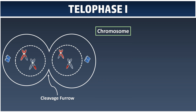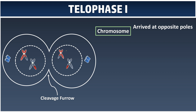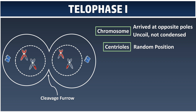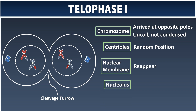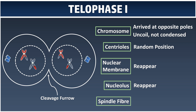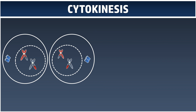Telophase begins when the chromosomes arrive at the opposite poles, and they will sooner or later become uncoiled and no longer condensed. The centrioles are placed at random positions, and both the nuclear membrane and nucleus will form back and reappear. The spindle fiber just disappears. In the end, cytokinesis happens and cuts through entirely to separate the two daughter cells.